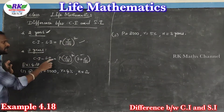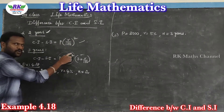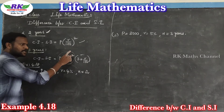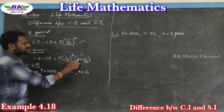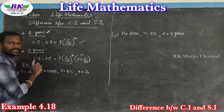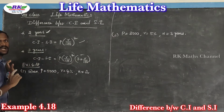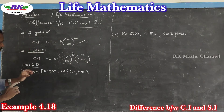For three years, it is the same P into R by 100 whole square, but for three years you add 3 plus R by 100 to it.